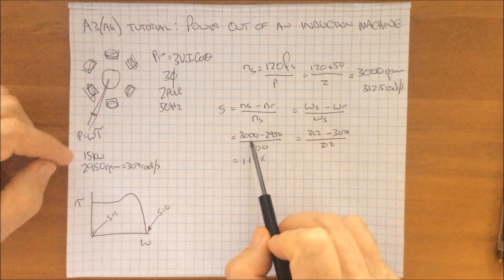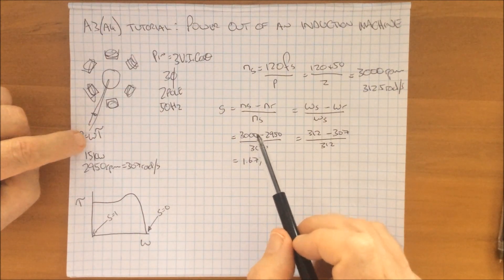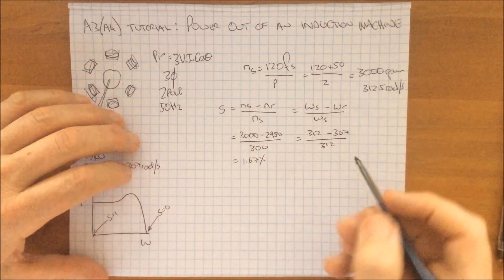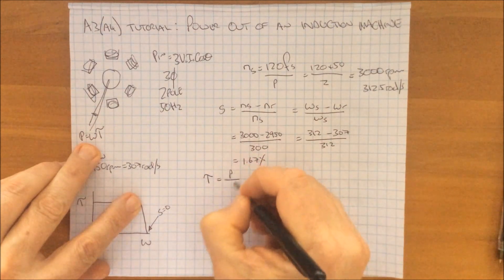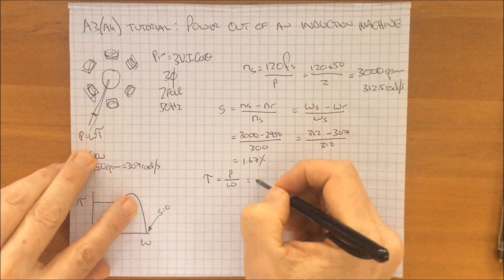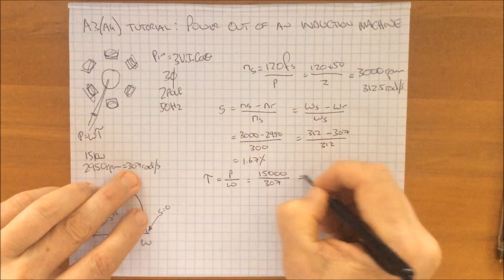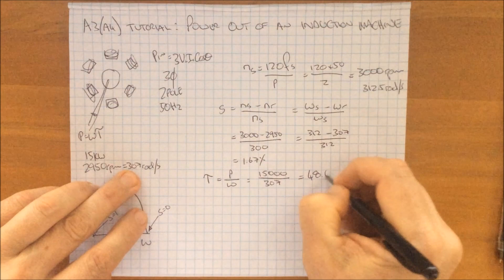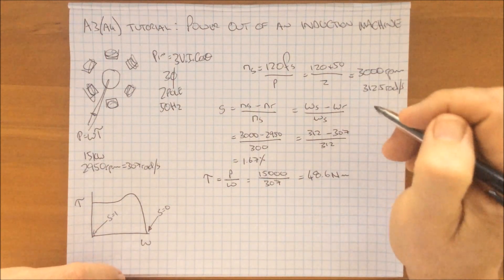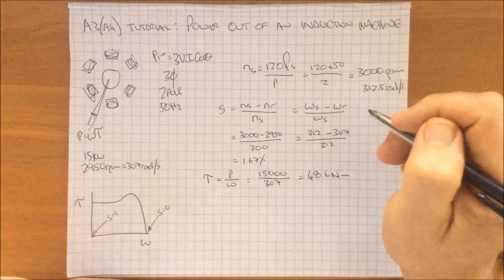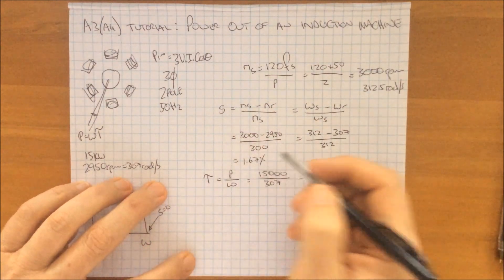We now have the slip of the machine and we know how much power output it's doing. We can calculate the torque by rearranging the equation: torque is power over speed, which is 15 kilowatts over 307, and that gives us 48.6 newton meters of torque. The question now becomes: let's say we load the machine — we get it to do more work such that torque doubles. What happens if torque doubles?